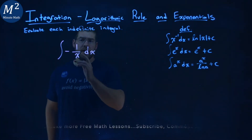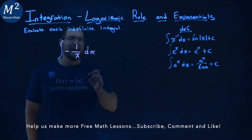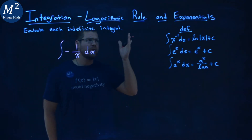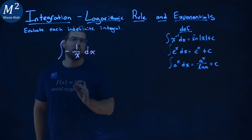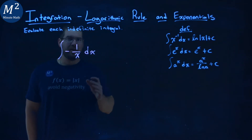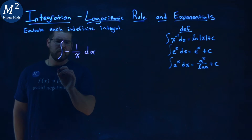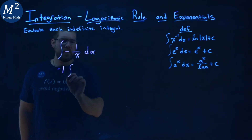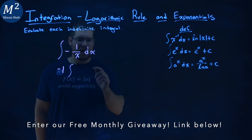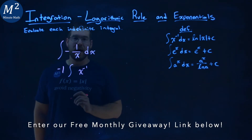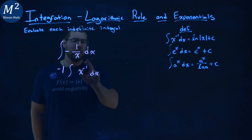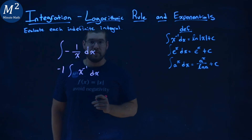We're given this problem right here: the integral of negative 1 over x dx, and we have to find that indefinite integral. We want to use our definitions, so I'm going to try to rewrite this to look like one of our definitions. We know we can pull that negative out of the integral as a constant — a negative 1. So I'll pull out a negative 1, and now I have the integral of 1 over x. Well, 1 over x can be rewritten as x to the negative 1 power, and then we have a dx. We can see this inside part looks just like our definition, so we can apply it.